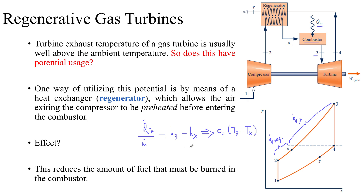Another point to notice is that the external heat transfer required by the gas power plant is going to decrease as the specific enthalpy at state x increases. So if you keep increasing state x, the heat content added into the system by means of fuel is going to decrease. Naturally the question would be: how much can you increase this point x, and where is the maximum theoretical limit of Tx and the specific enthalpy hx?